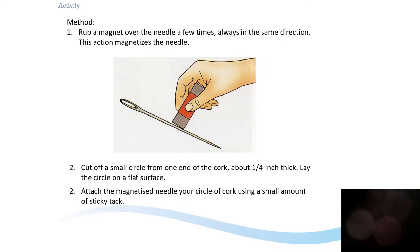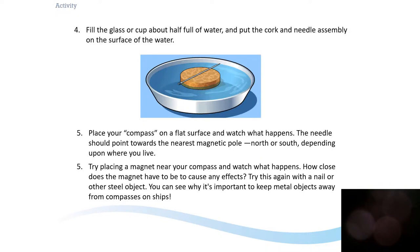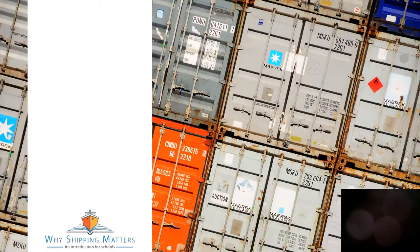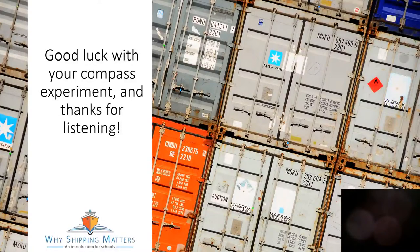If you rub the magnet over the needle a few times, always in the same direction, you'll magnetise the needle. Then you cut off a small circle from the end of the cork, put that on a flat surface, and attach your magnetised needle to your circle of cork. Put it into the water and the cork and needle will float on the surface. It should point to the nearest magnetic pole — north or south depending on where you live. If you're in the UK, it should point to the north pole. If you put your magnet near the compass, see what happens — it will try to move the needle to where the magnet is. This is why we keep metal objects away from compasses on ships. Thank you so much for listening to this lesson. We hope you enjoyed it and good luck building your compass.